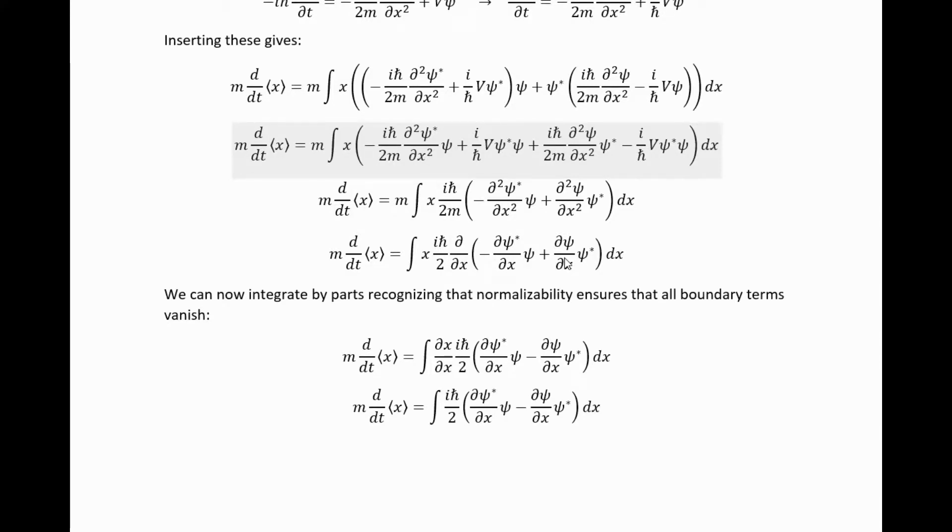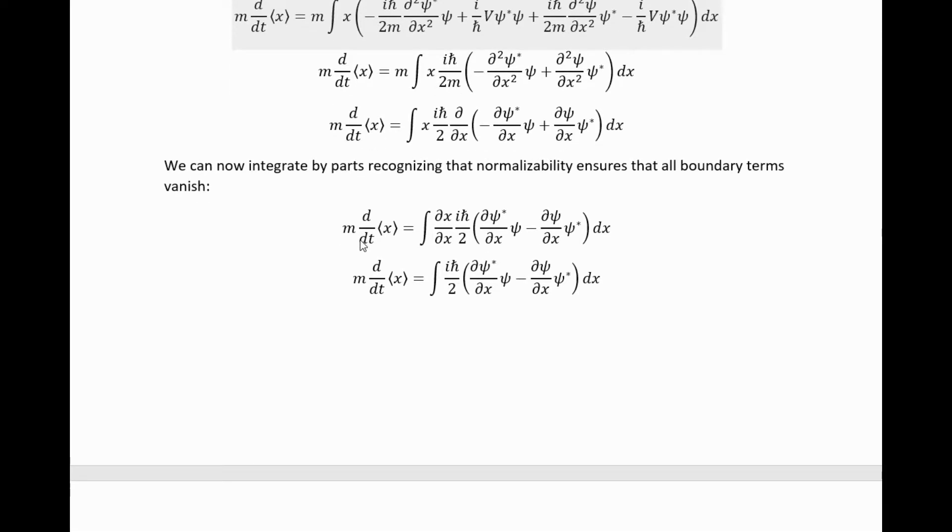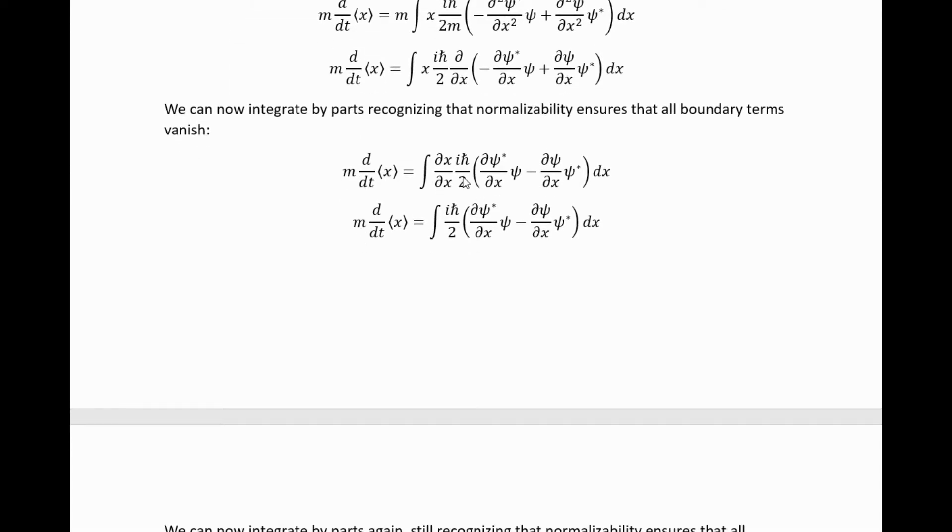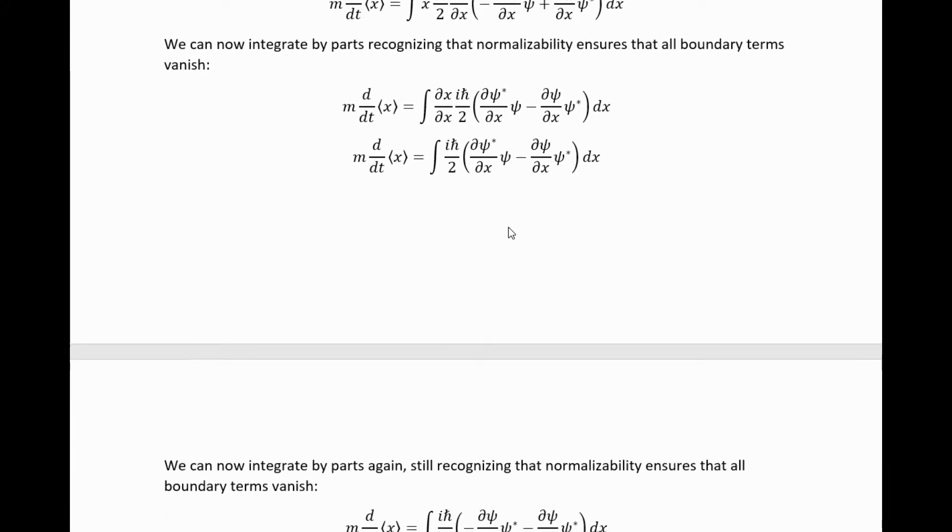Multiplying this through with that cancellation actually does return this. We can now integrate by parts, recognizing that normalizability ensures that all boundary terms vanish. We can integrate by parts productively, specifically by moving this partial derivative here over onto that x, which then just differentiates it to 1, which gets us here, really only at the cost of a minus sign.